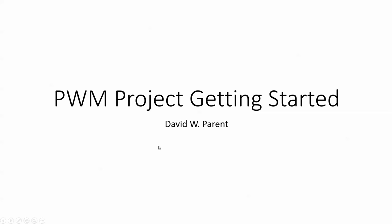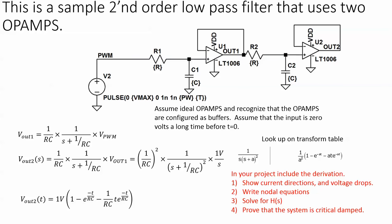Let's talk about getting started with our PWM project. You're doing a Sallen-Key second order low pass filter for your DAC project. So I thought I'd use an example of another second order filter that uses two op amps instead of one.